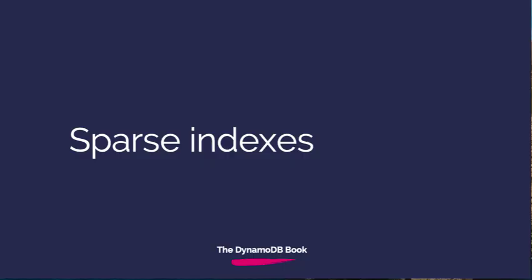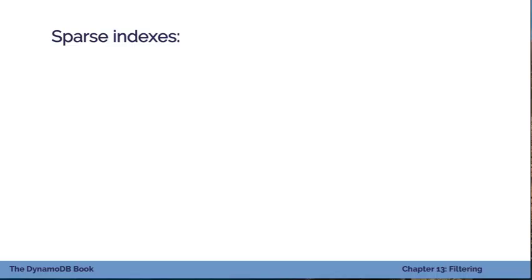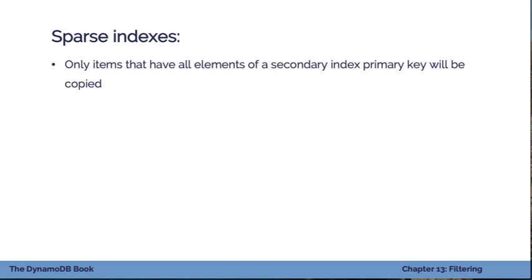Let's move into the fourth filtering strategy: sparse indexes. This is a really fun one, one of my favorites. When you create a secondary index, only the items that have all the elements of that secondary index's primary key will be copied into that index. So if you create GSI1PK and GSI1SK, and some of your items have those values but some don't, the ones that don't won't be replicated. You can use strategies around that to provide a global filter on your data. There are two different strategies I like to use.